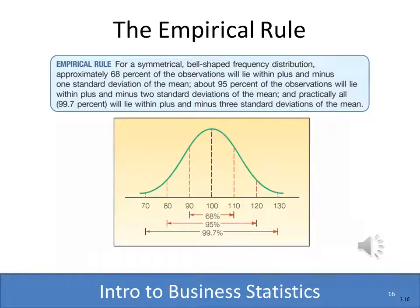It's time to introduce a little bit of theory. We're going to be working with normal distributions throughout the rest of this course, and it's time we introduced you to the empirical rule. If you look at this chart, you'll see a bell-shaped curve representing a normal distribution. In a normal distribution, the mean, the mode, and the median are all the same value. The empirical rule tells us that most values occur near the mean, and approximately 68% of all observations will fall within plus or minus one standard deviation of the mean.